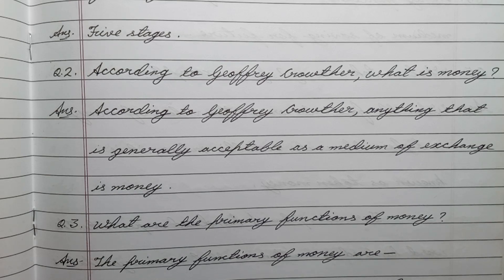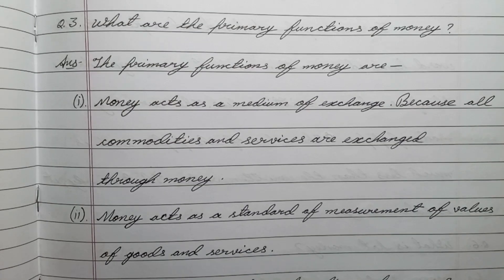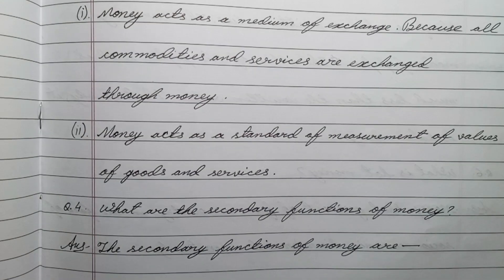Answer: according to Geoffrey Crowther, anything that is generally acceptable as a medium of exchange is money. Question number three: what are the primary functions of money? Answer: the primary functions of money are — number one, money acts as a medium of exchange because all commodities and services are exchanged through money; number two, money acts as a standard of measurement of values of goods and services.